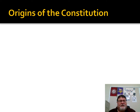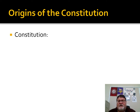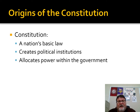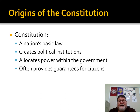We're going to talk about a couple of documents and then the origins. So we have to understand what a Constitution is. A Constitution is, generically, a nation's basic law. Any nation that has one, it should be their basic law. It creates the political institutions of the country, allocates power within the government, and provides guarantees for citizens, as ours does — and we'll see that as we go through the Constitution and the Bill of Rights.